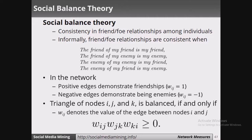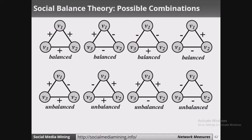The value we get should be positive for the graph to be balanced. In general, if you have an even number of negative edges in a graph, it will be a balanced graph. If the number of negative edges in the graph is odd, then the graph is unbalanced.